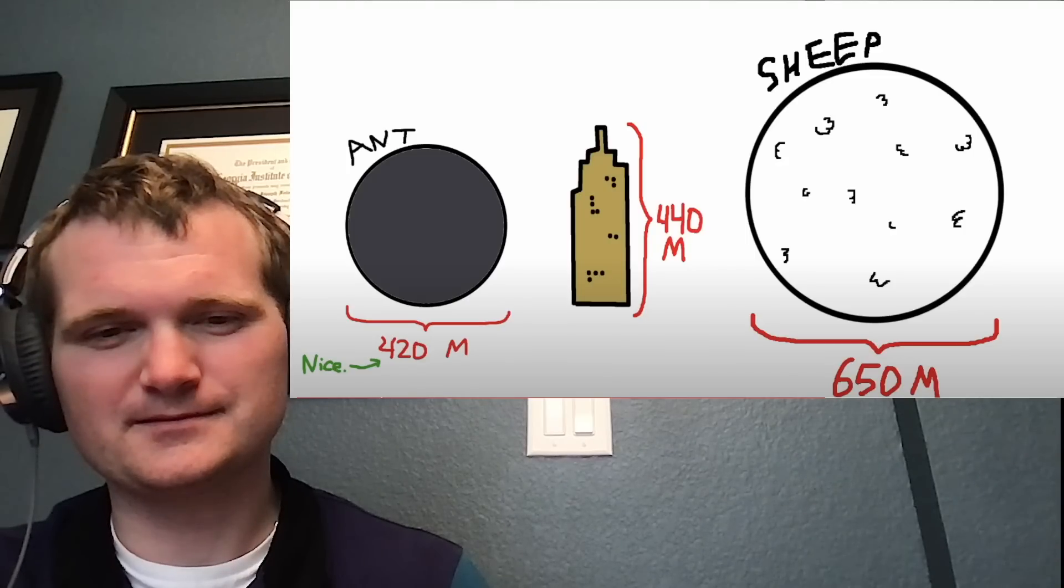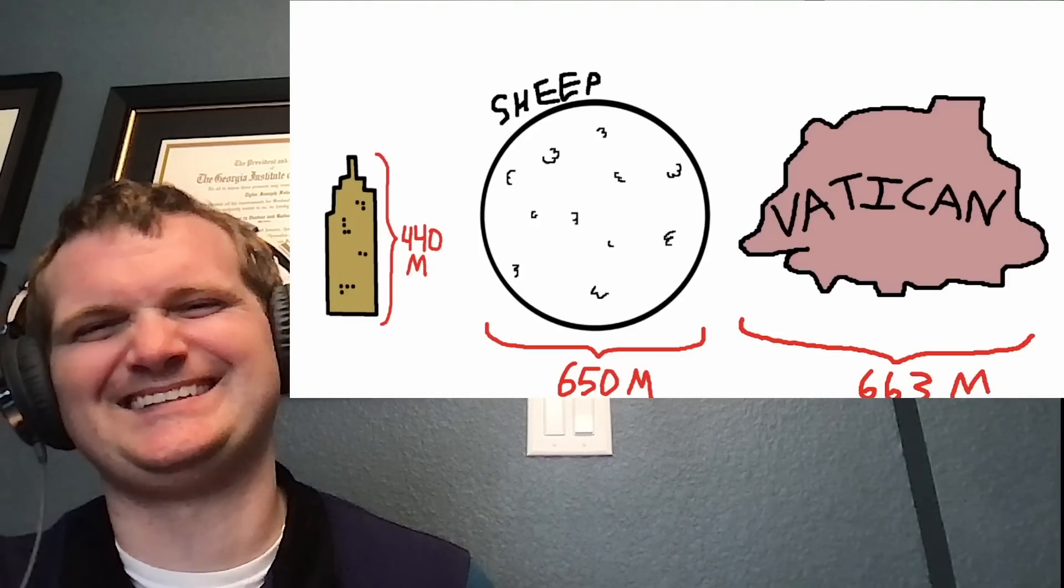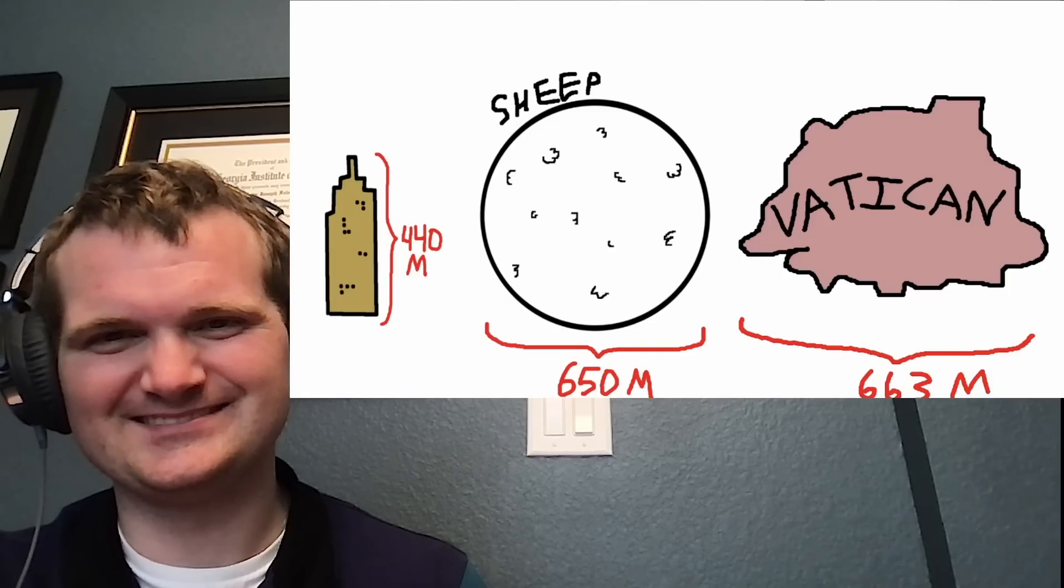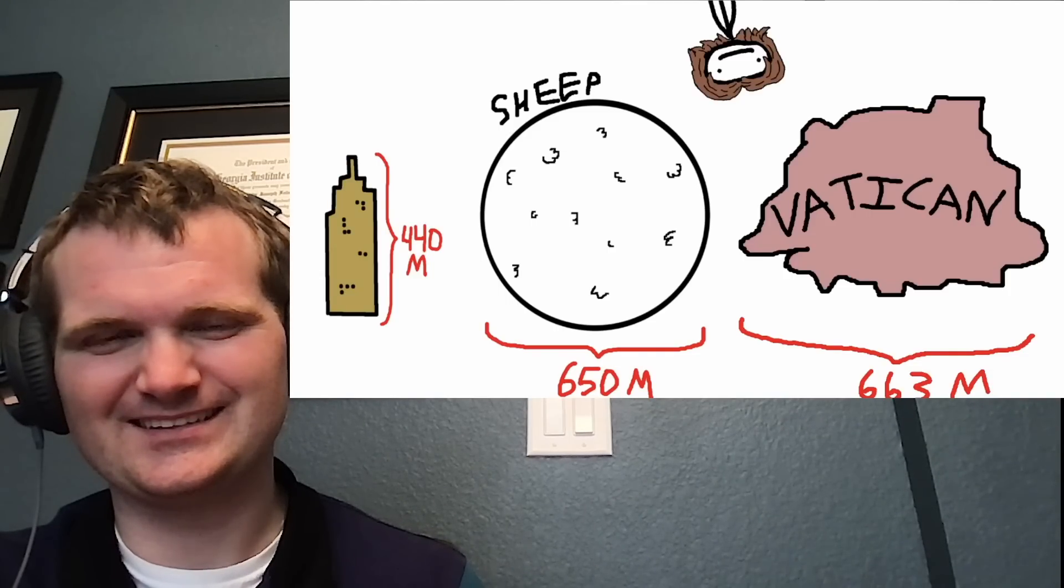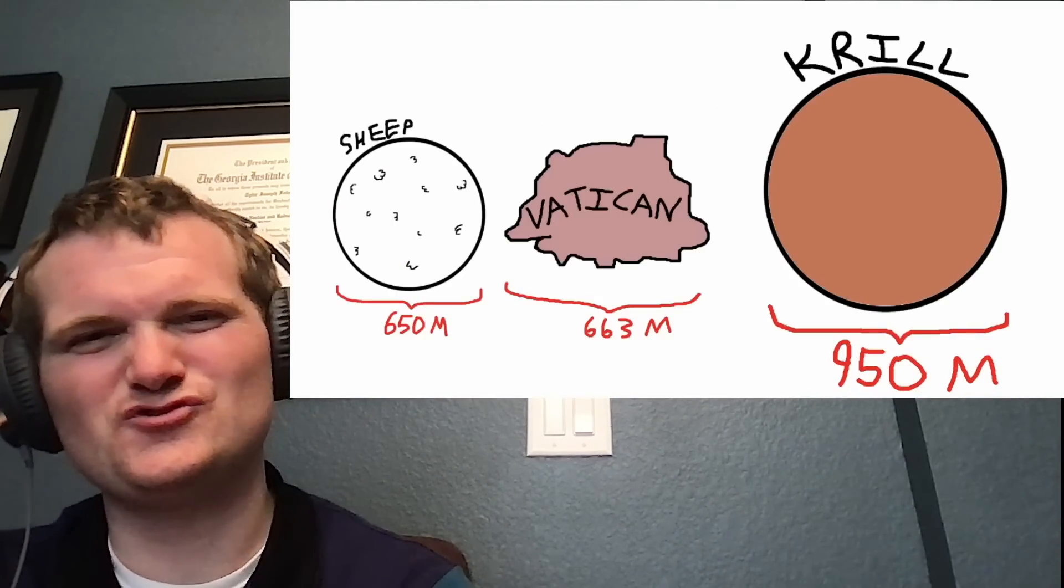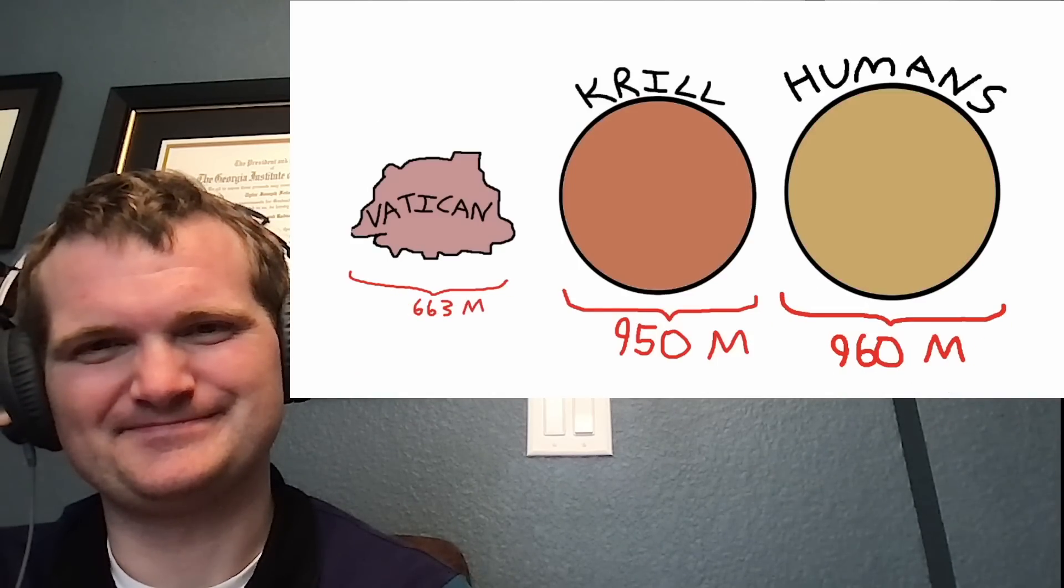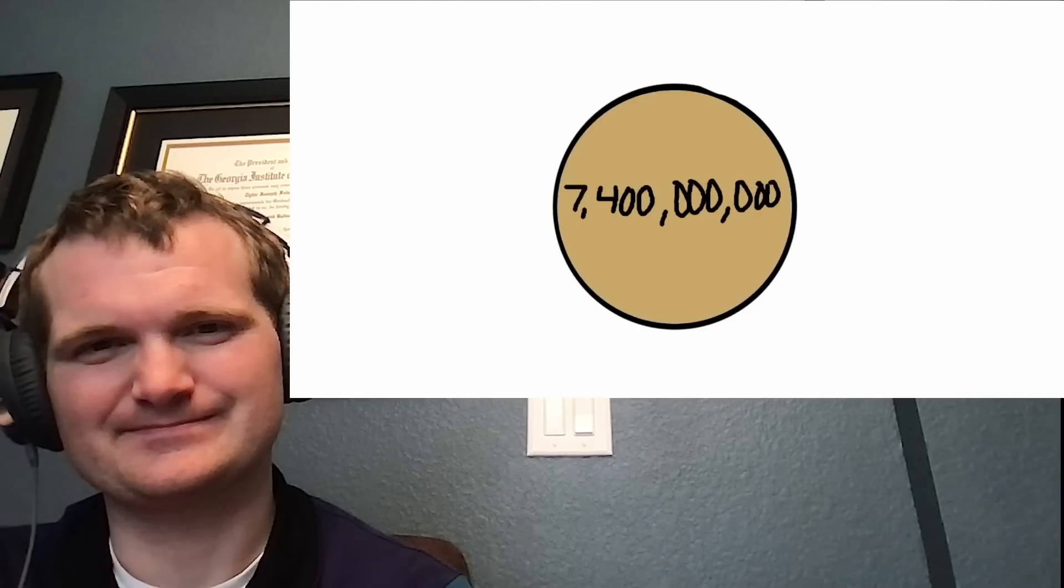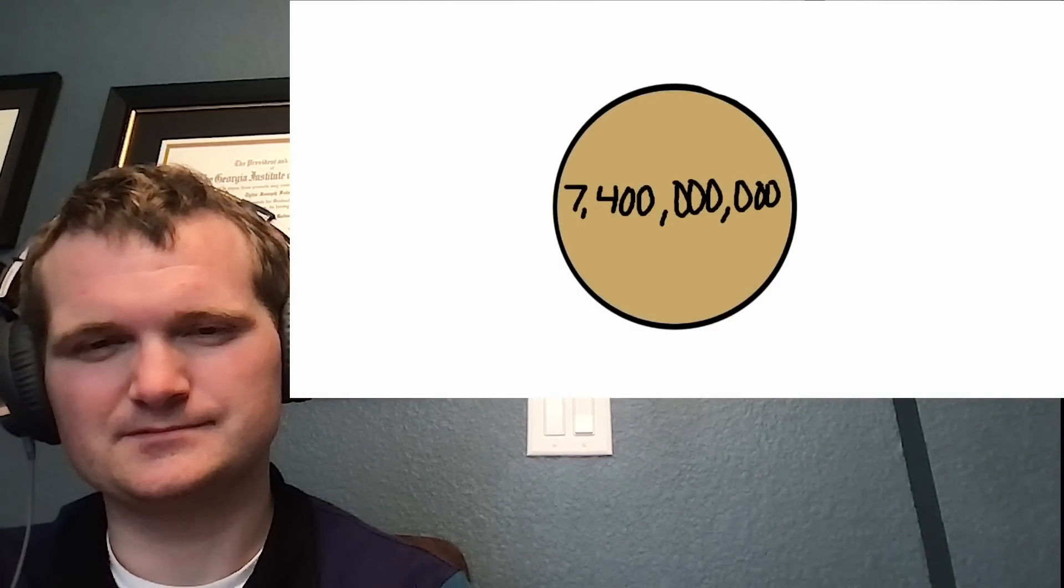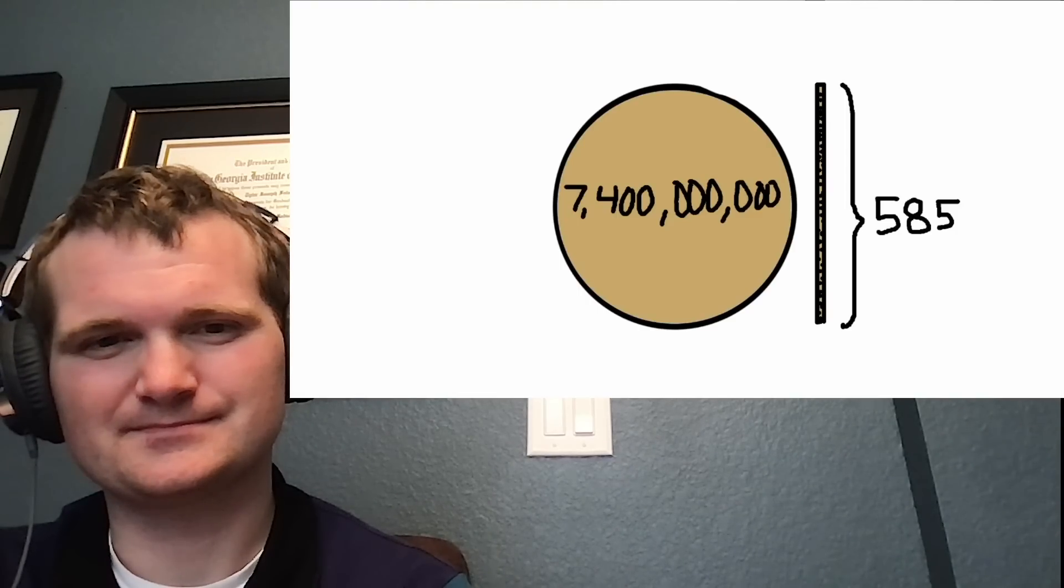Next up is the Sheep Sphere, which got up to 650. Close to that is the Vatican City, which is 663 meters across. That means the Vatican is just big enough to hold all the sheep in the world. If that's not a metaphor, I don't know what is. Near the top of our list is the Antarctic Krill Planet, which reached about 950 meters. The People Planet was just a smidge larger at 960. Interestingly enough, despite the fact that there are 7.4 billion people in the sphere, it would only take 585 of them stacked toe-to-head to reach the height of the sphere.